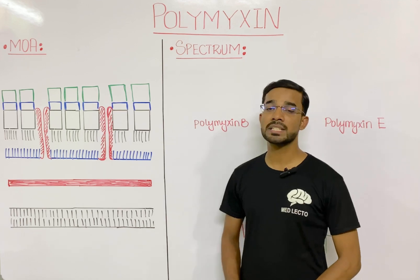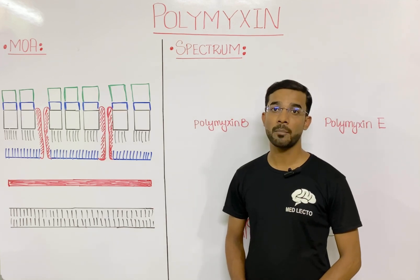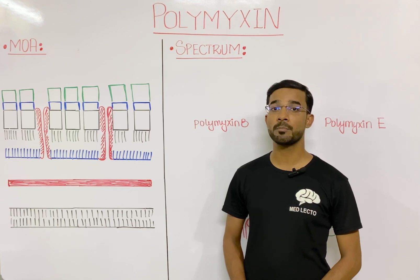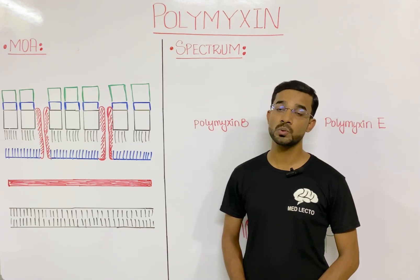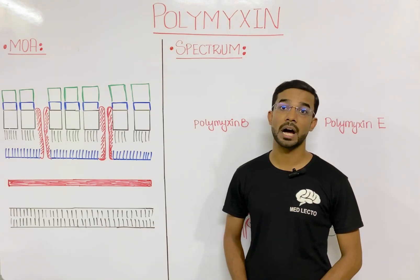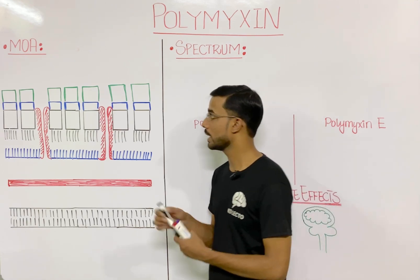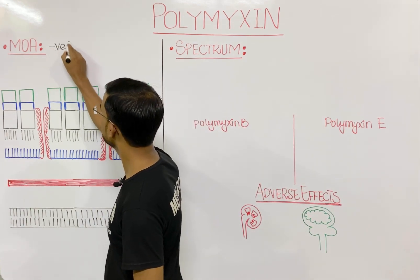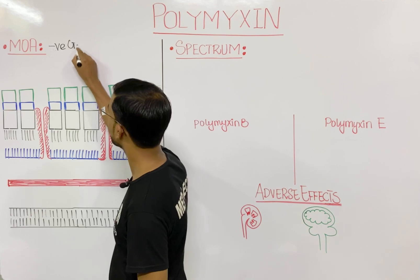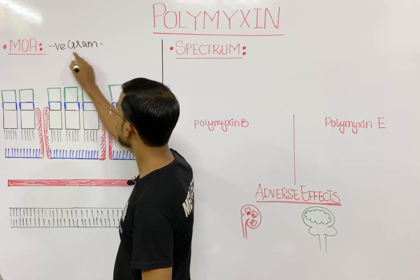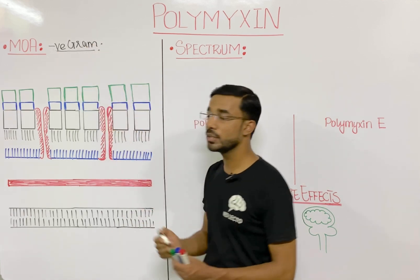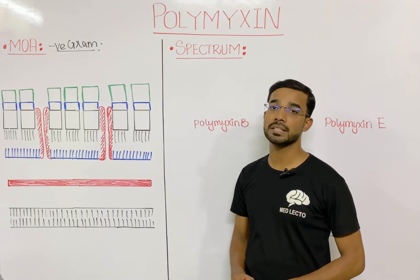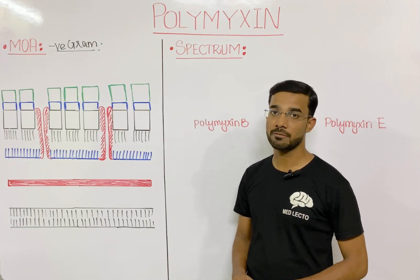First, we will discuss the mechanism of action of polymyxin. The most important thing to remember is that polymyxin is actually used against gram-negative bacteria. We will look at the different composition of the cell membrane and cell wall of gram-negative bacteria.